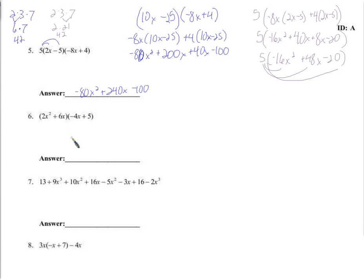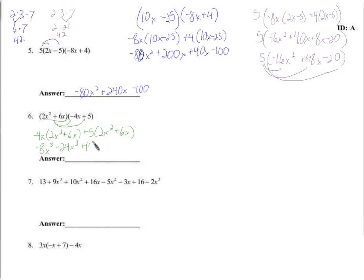We have a straightforward double distribution. We'll distribute the entire thing to negative 4x and to 5. Negative 4x times (2x² plus 6x) plus 5 times (2x² plus 6x). Distributing: negative 4x times 2x² is negative 8x cubed. Negative 4x times 6x is negative 24x². 5 times 2x² is 10x². 5 times 6x is 30x. So we wind up with negative 8x cubed, negative 24x² plus 10x² giving negative 14x², plus 30x.